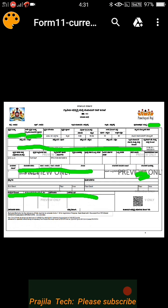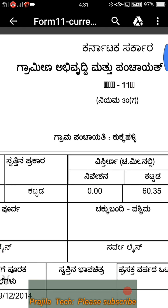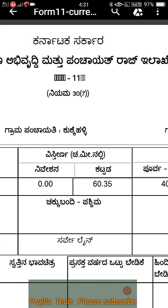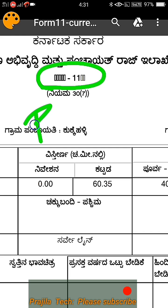Now let us see how the e-katha looks. This is a digital katha. A digital katha has a form number on top and a digital signature at the bottom. When you zoom in on top, you can see the form number. In this case, this e-katha has form number 11B, which means it is a B-katha.